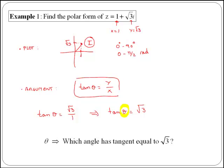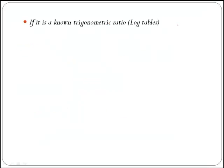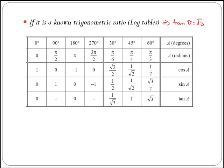In some cases you can find the answer either by using your log tables or by using your calculator. If you are in the case of a standard trigonometric ratio that you can find in your log tables, as is the case here where tan of theta is equal to the square root of 3, to find the angle you just need to go to your log tables and find out which angle has tan equal to the square root of 3.